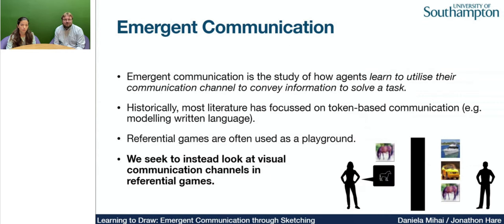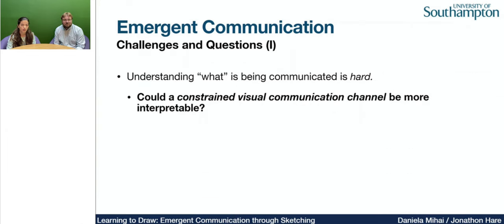So she has to learn to communicate just the right amount of information for Bob to select the correct image. In this work, we replace the traditional token-based communication channel with a visual communication channel by training agents to draw. The first question is: is this constrained visual communication channel more interpretable? Because we've observed in the past that understanding what is being communicated by the agents can be very difficult.